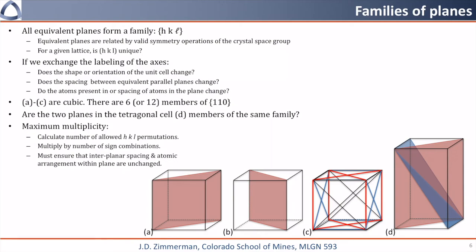So we can calculate the maximum multiplicity. So we're going to calculate the number of allowed HKL permutations, and then we're going to multiply that by the number of sign combinations. Finally, we just need to make sure that we've followed all the rules I gave above. So you're going to get somewhere between 1 and 48 equivalent planes per family.